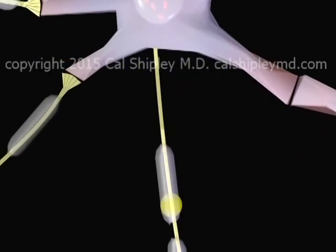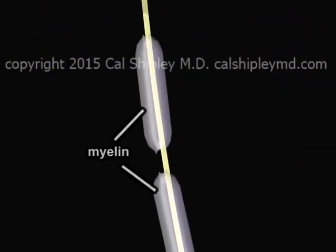The axons are surrounded at intervals by a tissue known as myelin, which facilitates movement of the electrical impulse and prevents leakage of the charge into surrounding tissues. Normal myelination is critical to nervous system function, and loss of myelin can lead to serious disorders such as multiple sclerosis.